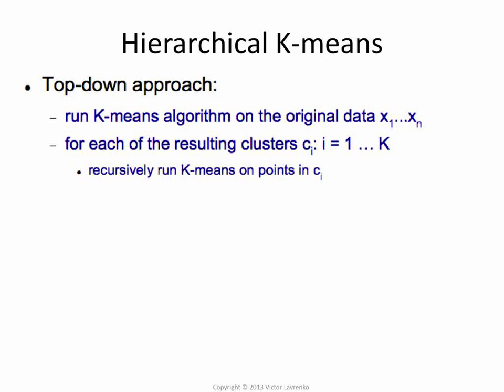For top-down approaches, the simplest one is hierarchical k-means. We know how to split a data set into a fixed number of clusters, so if we apply this algorithm recursively we can generate a structure. The idea is: start with all data points, run k-means with some fixed k — let's say 2 for simplicity — splitting the data set into two clumps. Then for each of the two clusters found, run k-means on it again, and again, recursively.